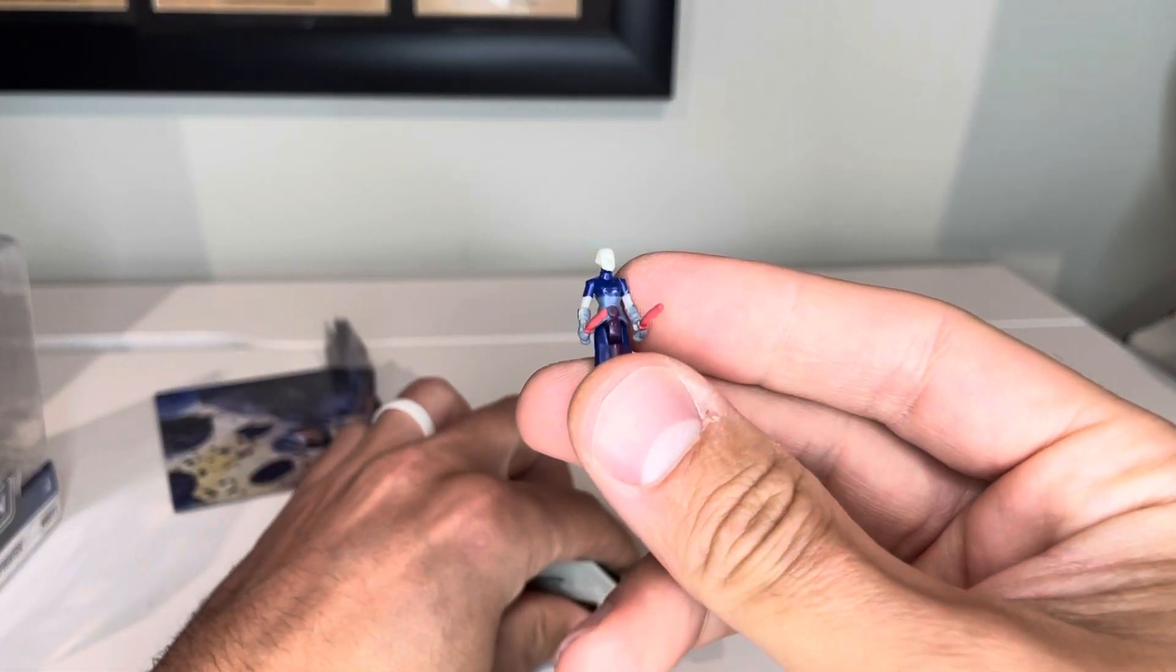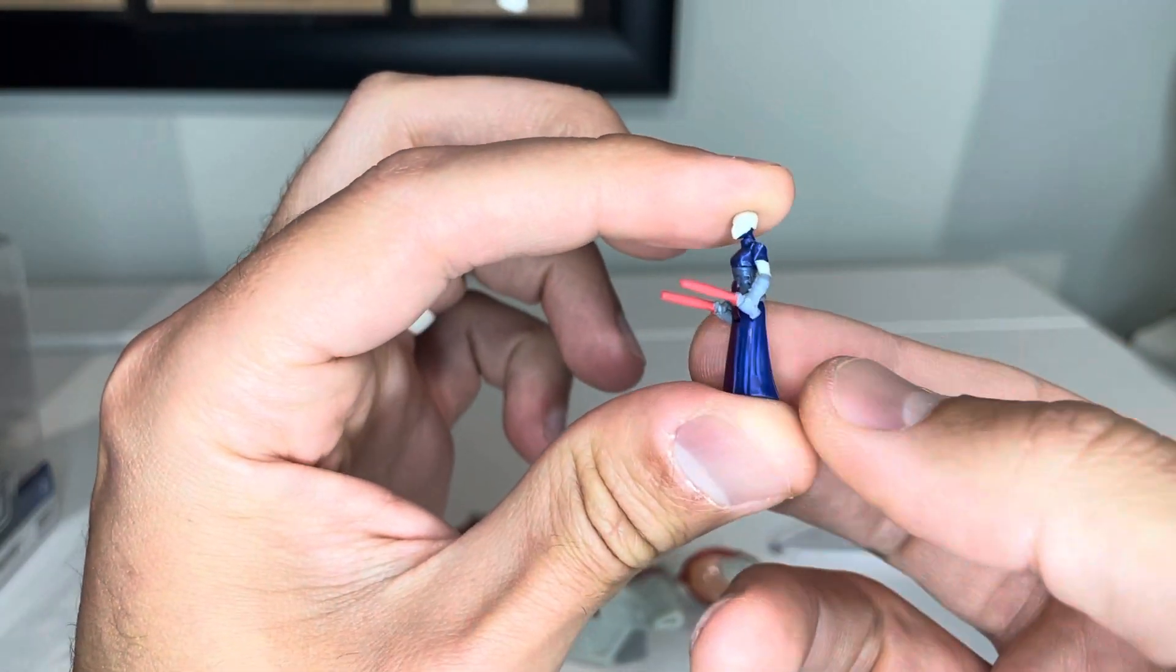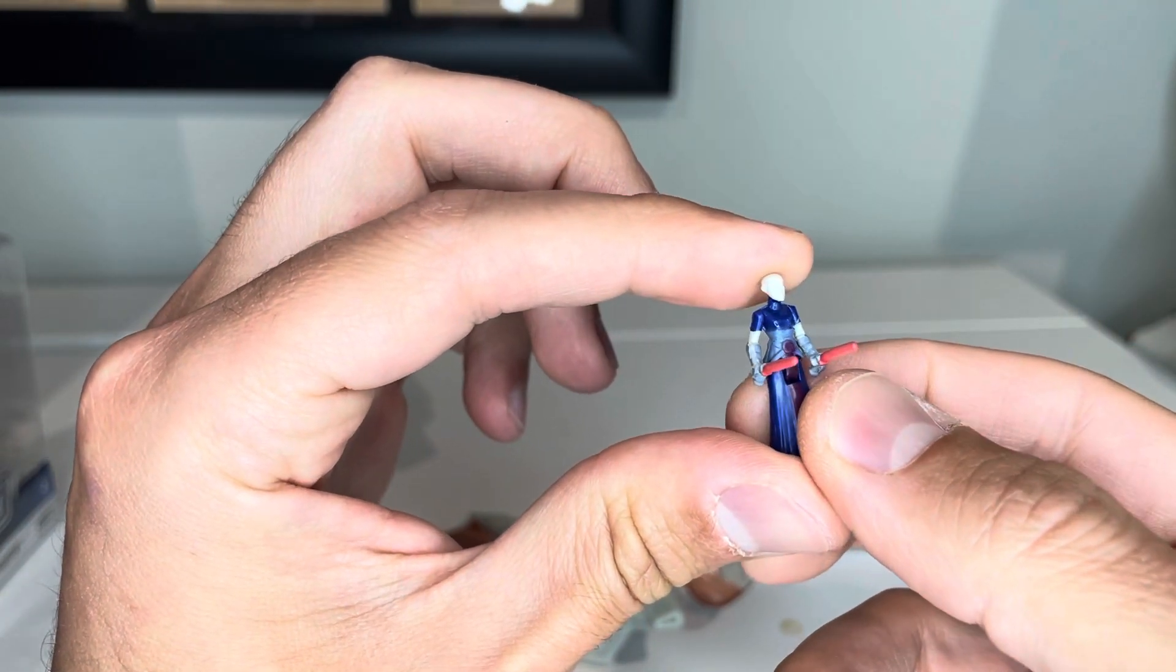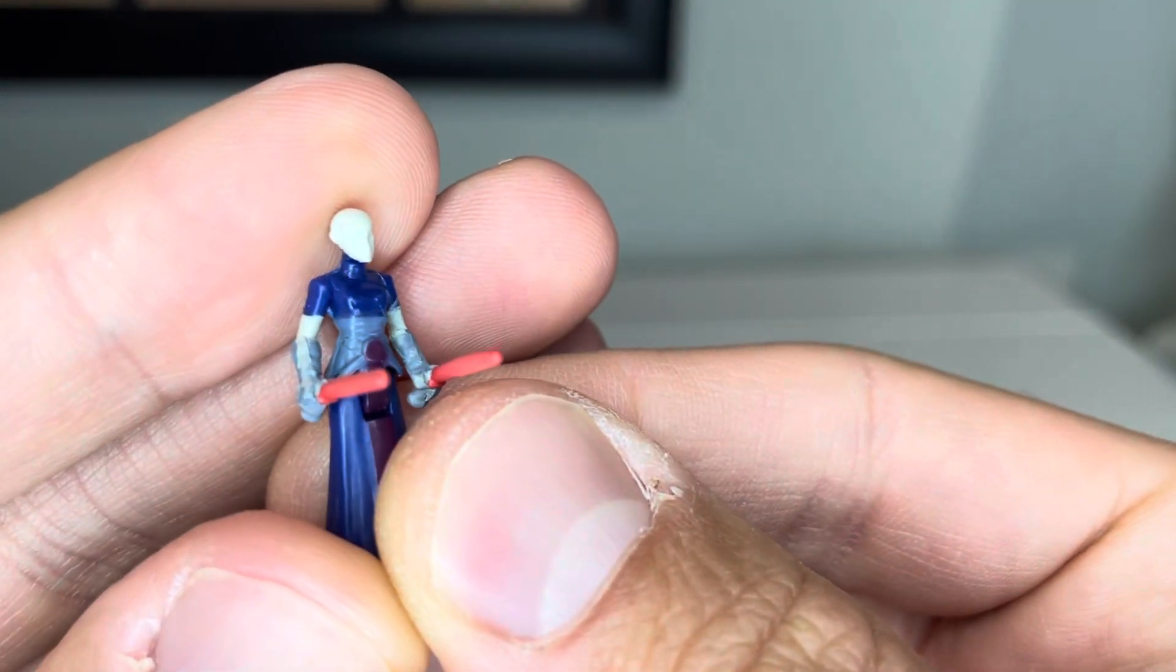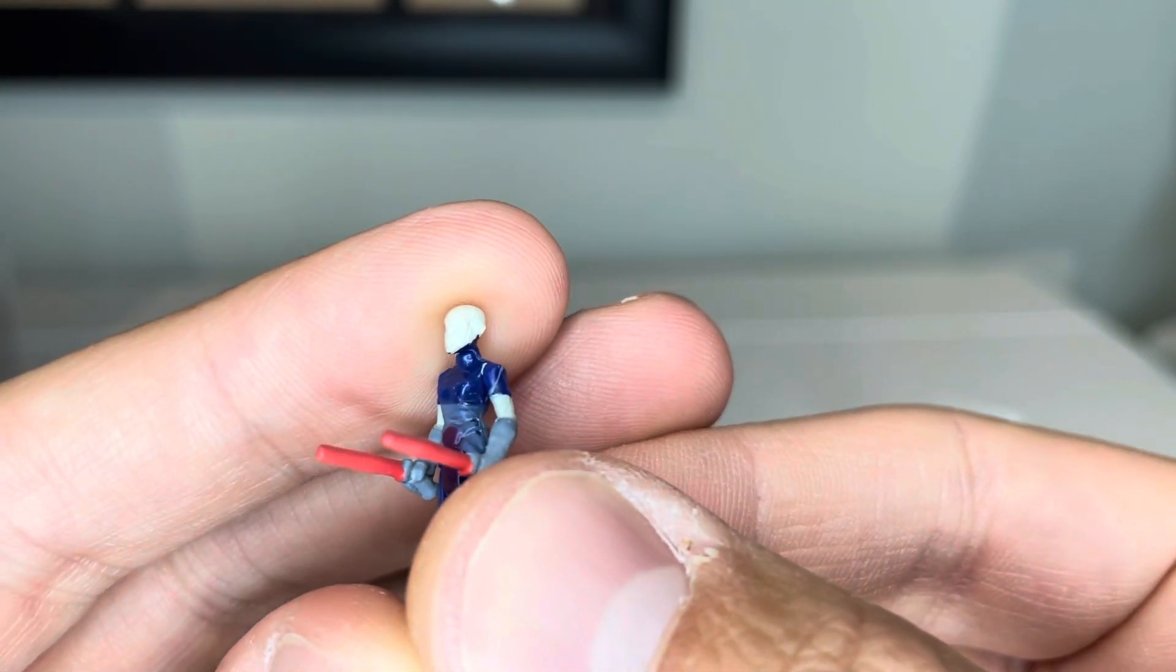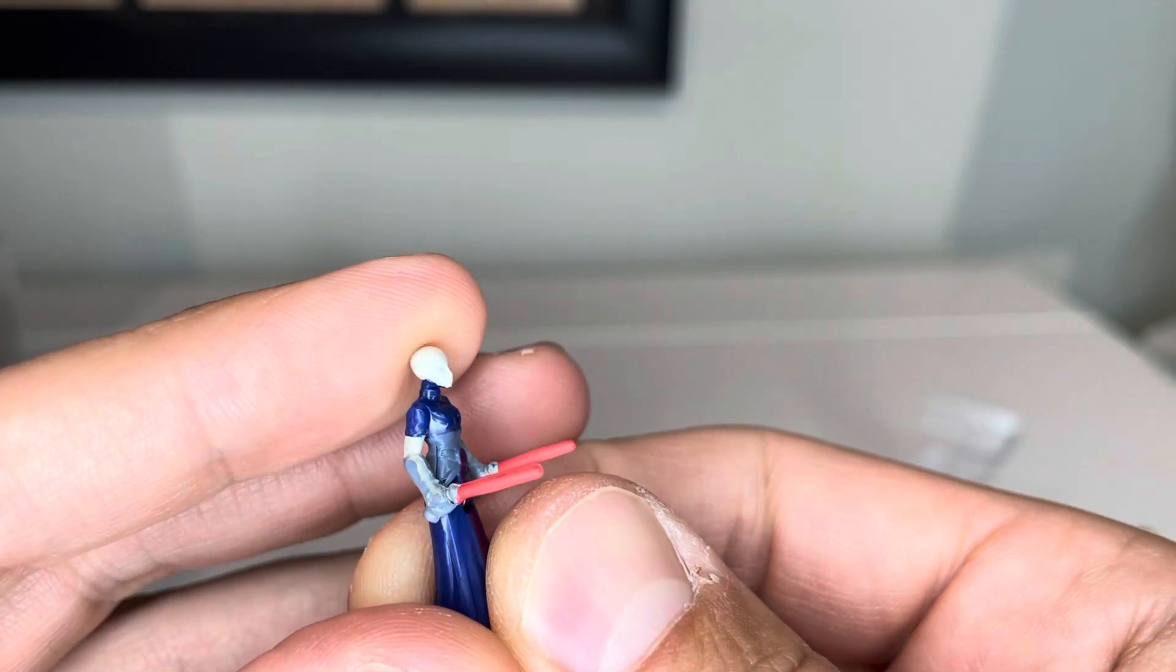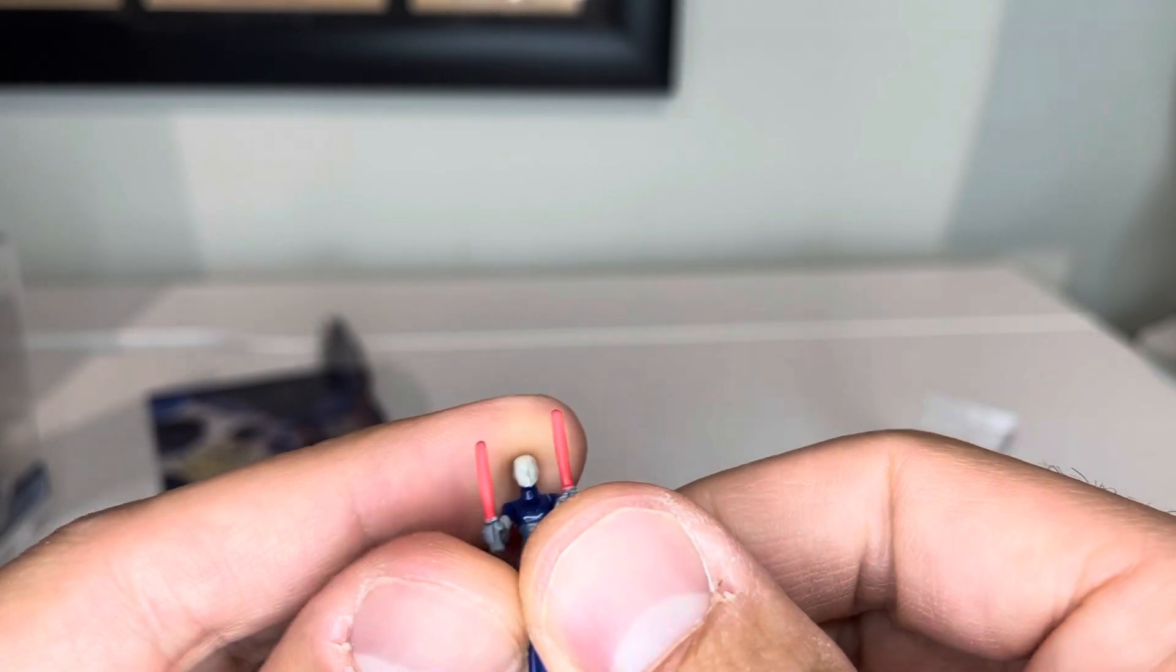Then you get Asajj Ventress. She's got her two lightsabers which is pretty cool. This figure actually has a ton of detail. Let's see if we can get the detail here on the face. They did a really good job actually getting her eyes in there. Even though it's not painted you can still see the detail on there is pretty awesome, especially for a figure of this size.